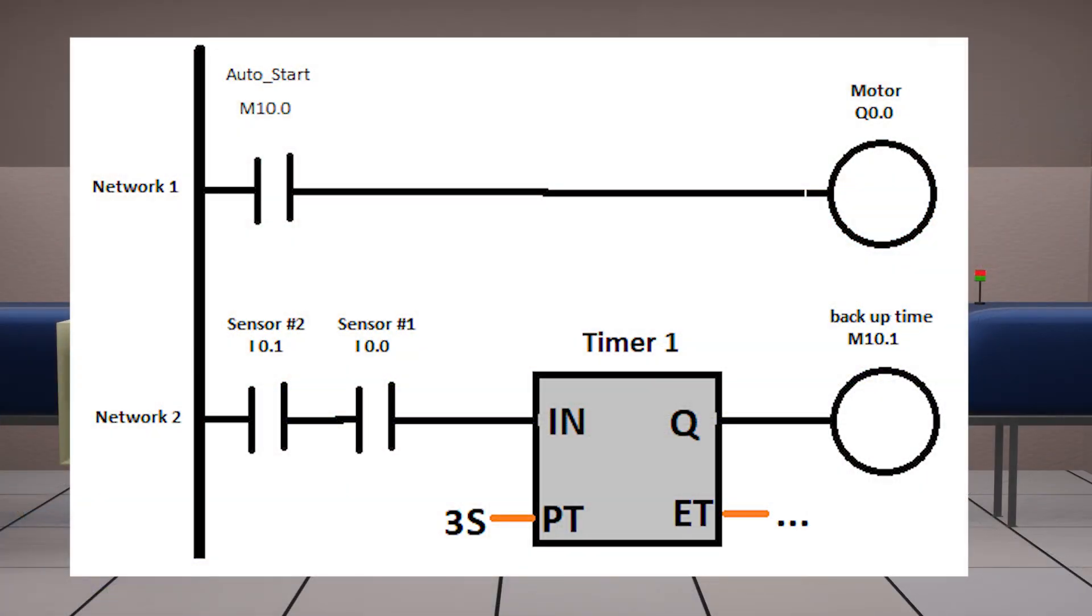In network 1, we insert a normal open contact of the auto start bit M 10.0. This contact will be used here to start the conveyor motor. Let's assume this signal may be coming from another program block.